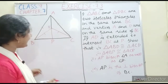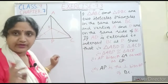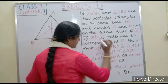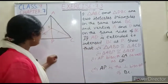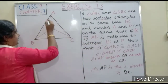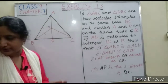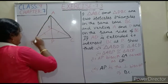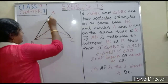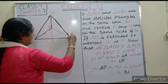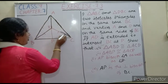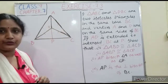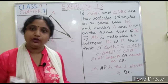We will prove one by one. First, we look at triangle ABD — that means this triangle A, B, D — and triangle ACD, that means this small triangle. We have to show these two are congruent to each other.